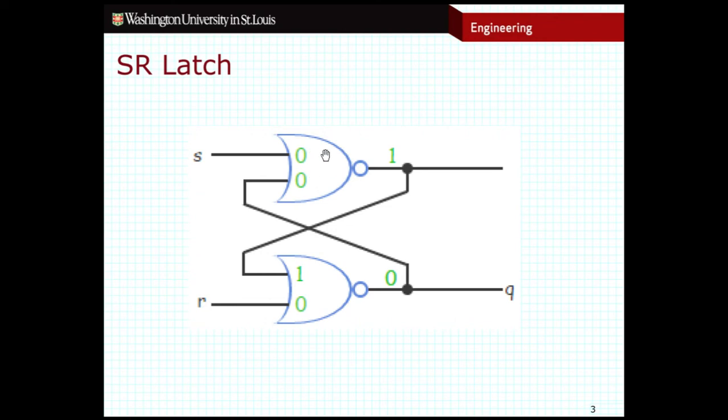And you see that it consists of two NOR gates that are cross-coupled. By cross-coupled, I mean that the output of this NOR gate is fed into the input of the second NOR gate, and vice versa, the output of the second NOR gate is fed into the input of this NOR gate.